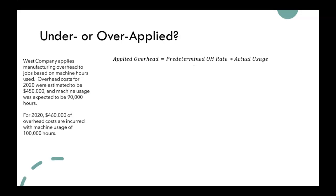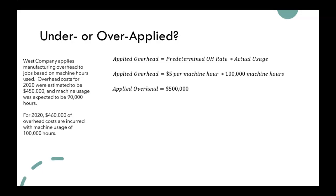We can use that predetermined overhead rate to figure out if our overhead was under or over applied. We need to calculate our applied overhead. We take that predetermined overhead rate we just found and multiply it by our actual usage — how many machine hours did we actually have in the year? We take our $5 rate times our 100,000 machine hours, so our applied overhead was $500,000.